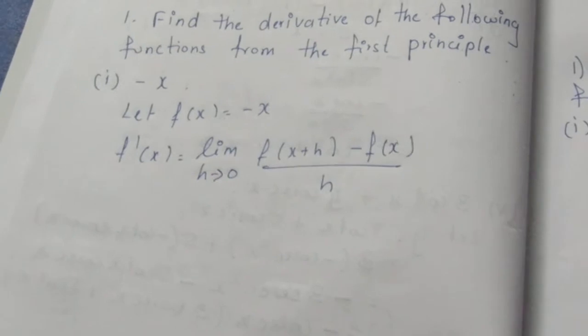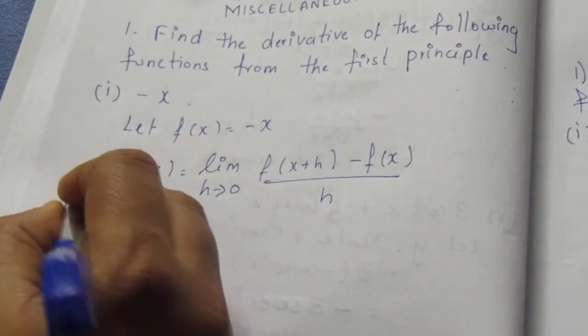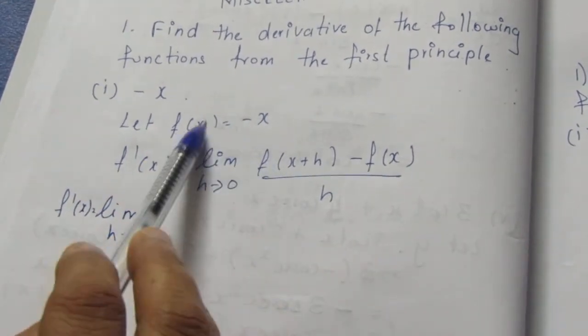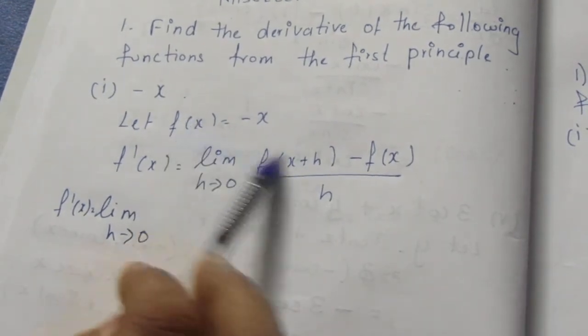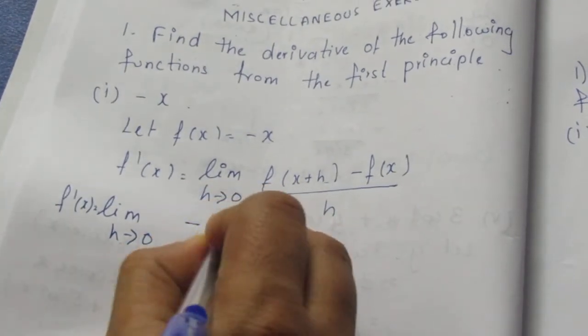Now I will differentiate using the formula. f'(x) = lim(h→0) [f(x+h) - f(x)]/h. For x, we substitute x+h, so we get -(x+h).